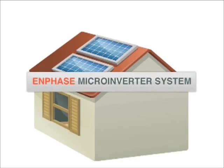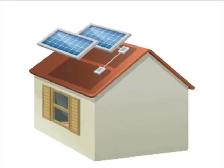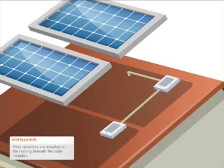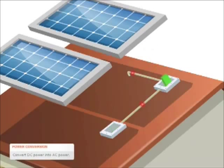The Enphase Microinverter System. The heart of the Enphase system is the microinverter. There is one microinverter installed beneath each solar module. Each microinverter converts the DC power from that module into grid-compliant AC power.